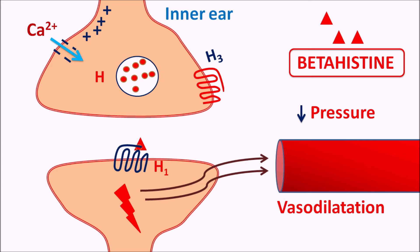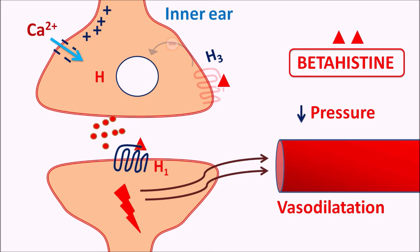Betahistine can also act on H3 receptors. The histamine released through exocytosis can act on these H3 receptors, which are auto-inhibitory in nature — they inhibit the release of histamine so that histaminergic neurotransmission is reduced within the inner ear. Betahistine acts as an antagonist at H3 receptors, and when these receptors are blocked, it increases the release of histamine so that histaminergic transmission is increased. So betahistine can increase the levels of histamine within the brain as well as the inner ear, and it can also increase 5-HT levels. By all of these actions, the symptoms of Meniere's disease can be reduced.